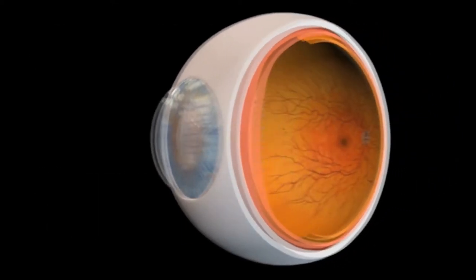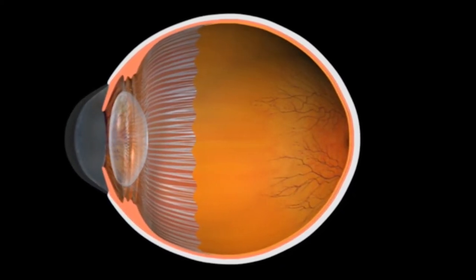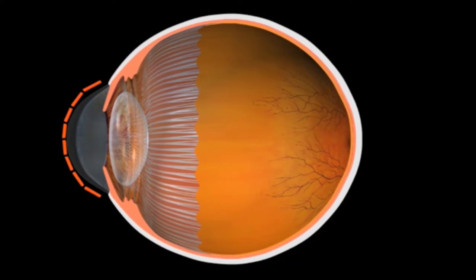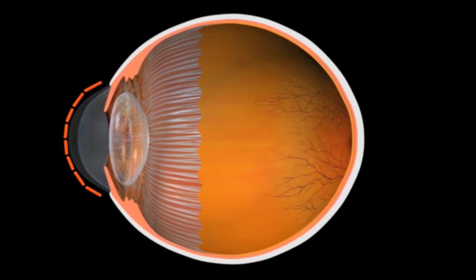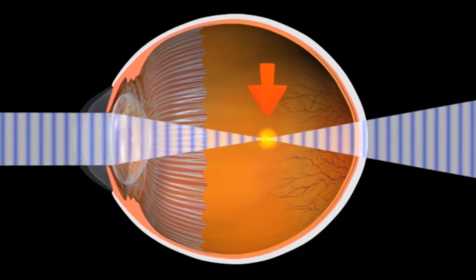Myopia, or nearsightedness, occurs when the eyeball is slightly longer than usual from front to back or the shape of the cornea is too steep. This causes the light entering the eye to come to a focus in front of the retina, which results in blurred distance vision.